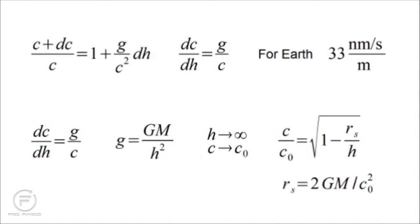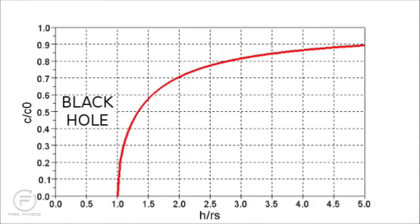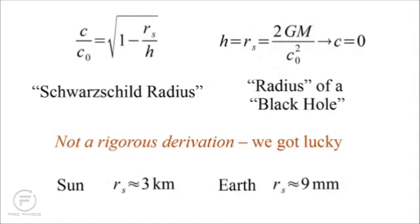If you plot the speed of light versus height h, you see that as h decreases down to be equal to rs — so that h over rs equals 1 — the speed of light decreases down to 0. Apparently under these conditions, light would stop propagating, would freeze in some sense. And we would certainly be justified in calling such a thing a black hole. Interestingly, this constant rs turns out to be precisely the so-called Schwarzschild radius that comes out of the rigorous general theory of relativity — the radius of a black hole's event horizon. It's important to emphasize that we just got lucky; this is not a rigorous derivation, but it's showing some of the concepts that will go into a general theory of relativity.